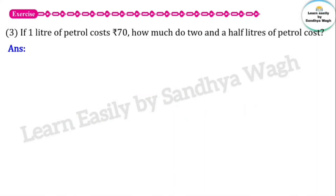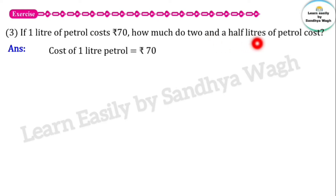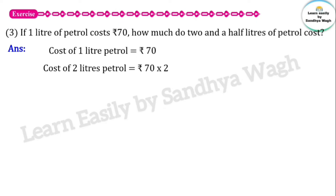Next question: If one liter of petrol costs 70 rupees, how much do two and a half liters of petrol cost? The cost of one liter of petrol is 70 rupees, and we need to find the cost of two and a half liters. Two liters of petrol costs 70 rupees multiplied by 2, which gives us 140 rupees.